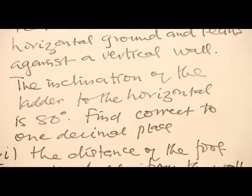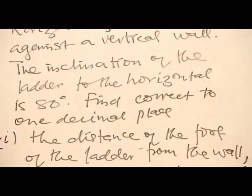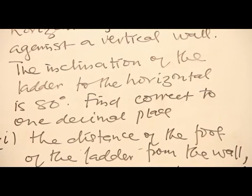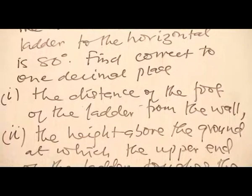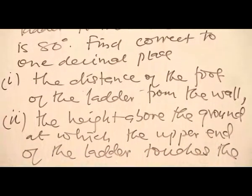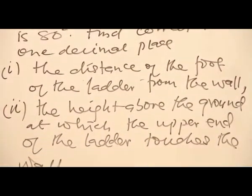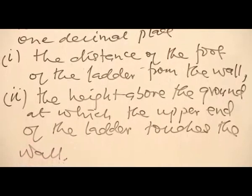Find correct to one decimal place: one, the distance of the foot of the ladder from the wall; two, the height above the ground at which the upper end of the ladder touches the wall.